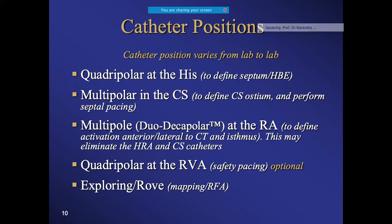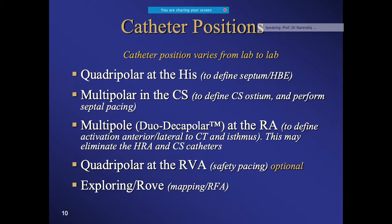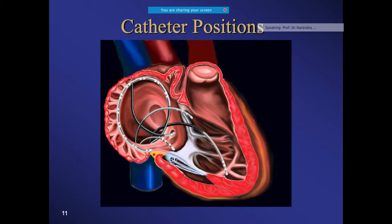For catheter positioning: a quadripolar catheter is placed at the His bundle region - named after the scientist His - a decapolar catheter is placed in the coronary sinus, and a dual decapolar catheter is kept in the right atrium. This allows you to see whether activation is anterior or lateral to the His region. You may also need a quadripolar catheter at the RV apex.